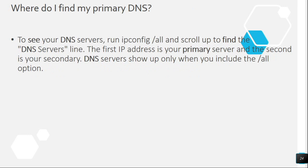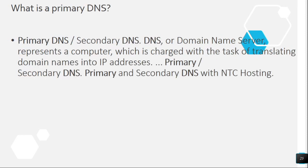Question 23: Where do I find my primary DNS? To see your DNS servers, run ipconfig /all and scroll up to find the DNS Servers line. The first IP address is your primary server and the second is your secondary. DNS servers only show up when you include the /all option.